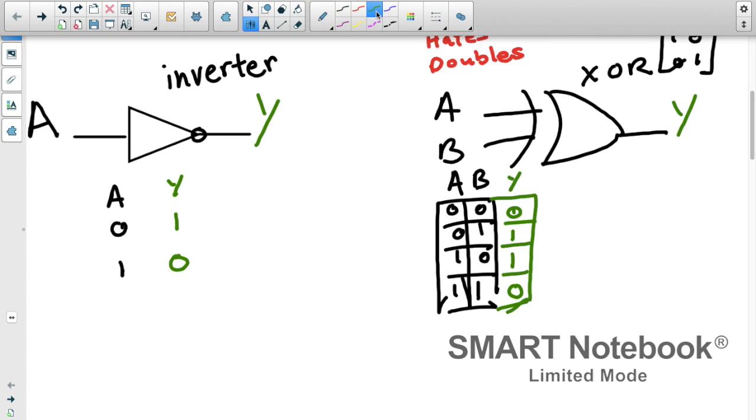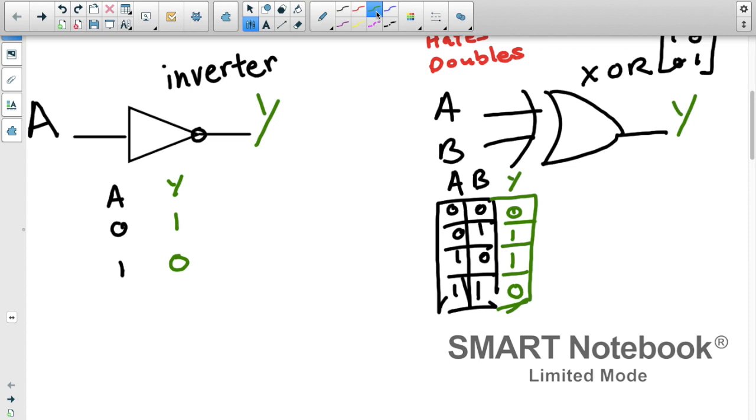There's another way of writing this. You'll see it on one of the problems later on. An inverter can also be written as, let me put it in red, can also be written as just a little dot. A little dot represents an inversion.